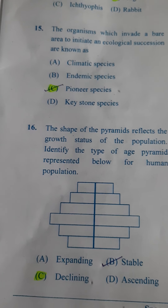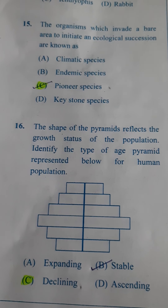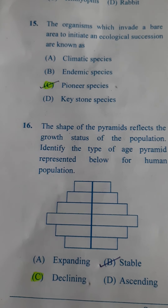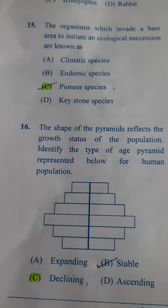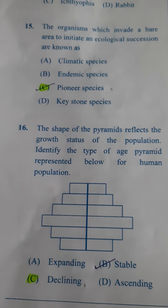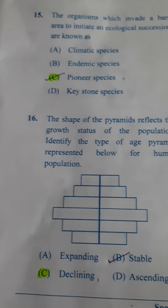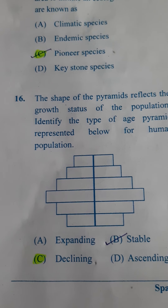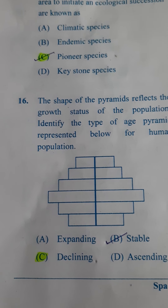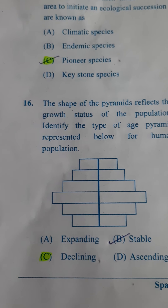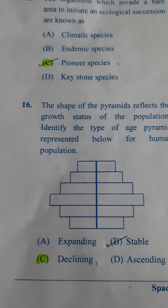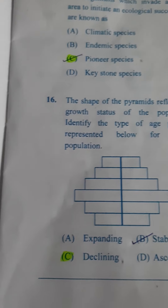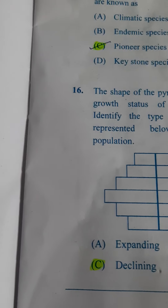Next one: The shape of the pyramid reflects the growth status of the population. Identify the type of age pyramid represented below for the human population. Here you have pre-reproductive less, reproductive are more, and post-reproductive are again less. Such a kind of pyramid is called declining. Answer is C.